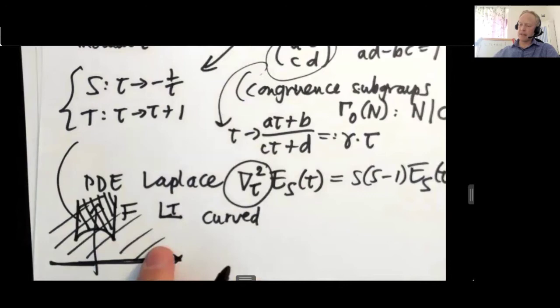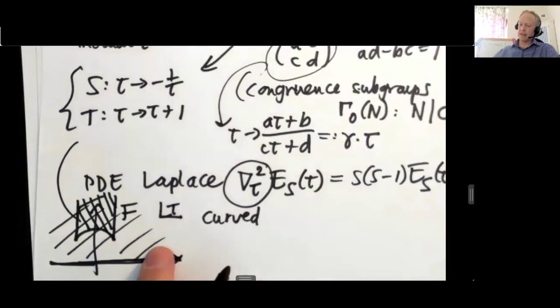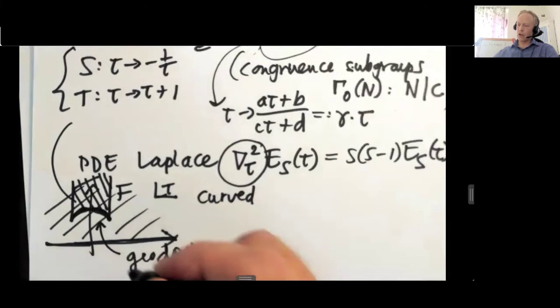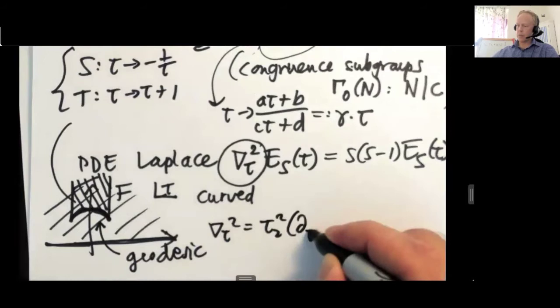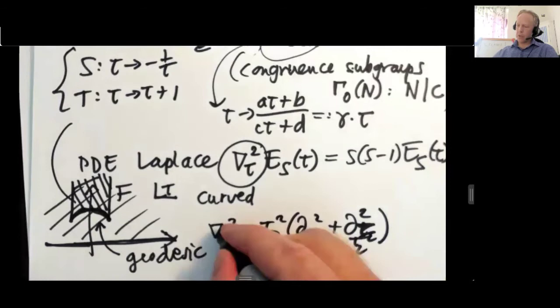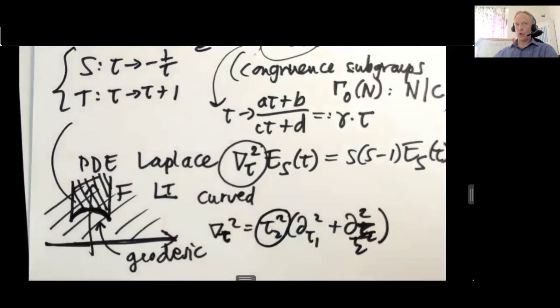One way to see this from this picture, that this is a curved space, is that this is a geodesic. In the curved space metric on the upper half plane, this is the differential operator here. Sorry, that should be the index tau 2 squared.